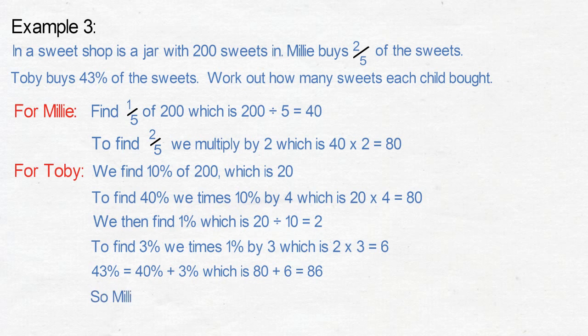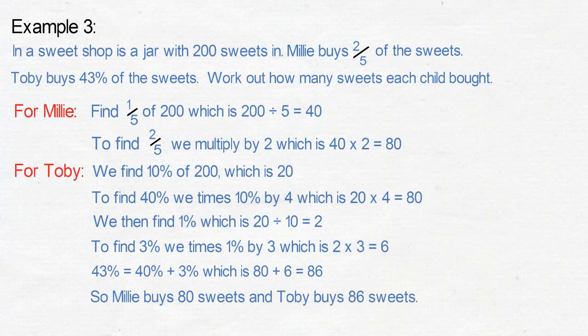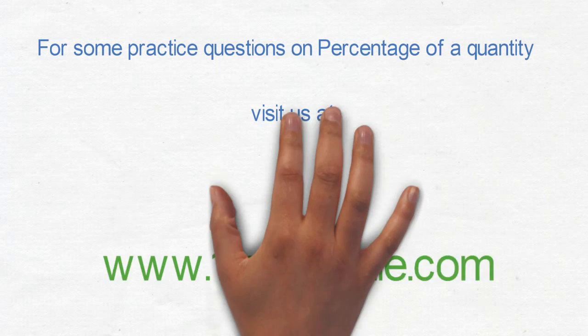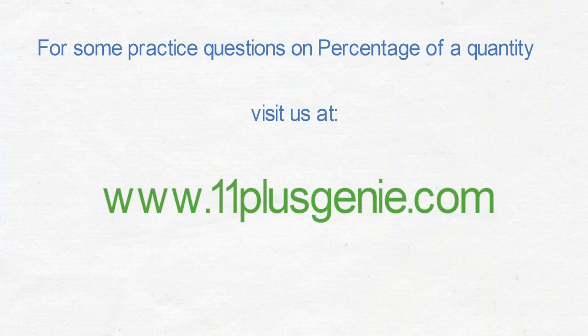So Millie buys eighty sweets and Toby buys eighty-six sweets. For practice questions on percentages of a quantity, visit us at www.11plusgenie.com.